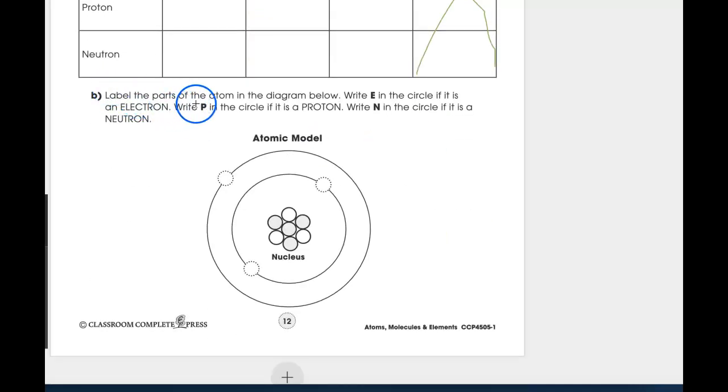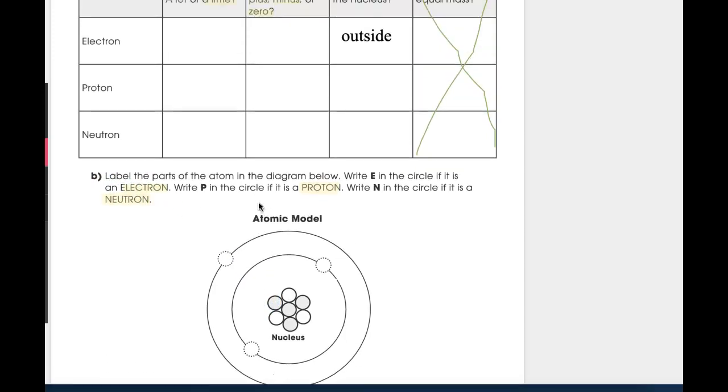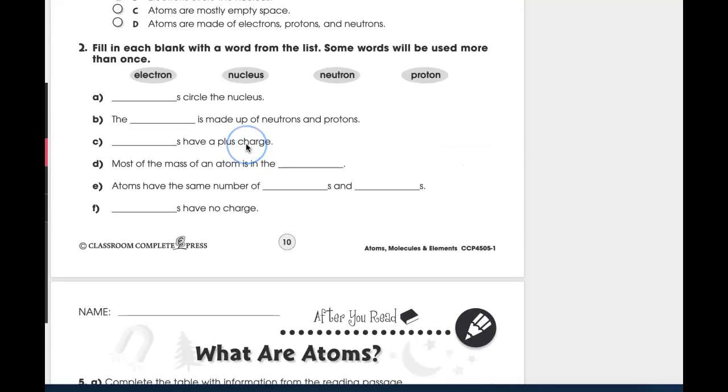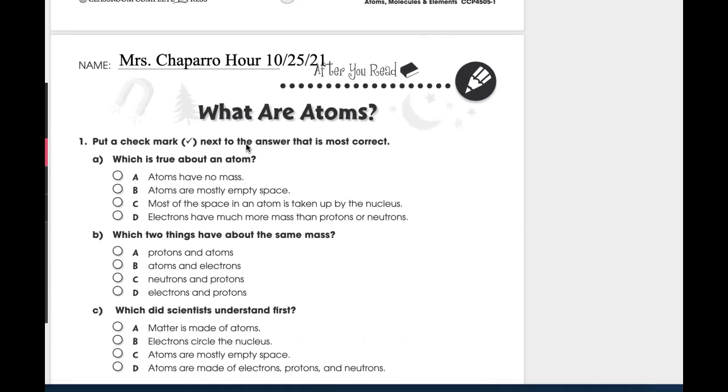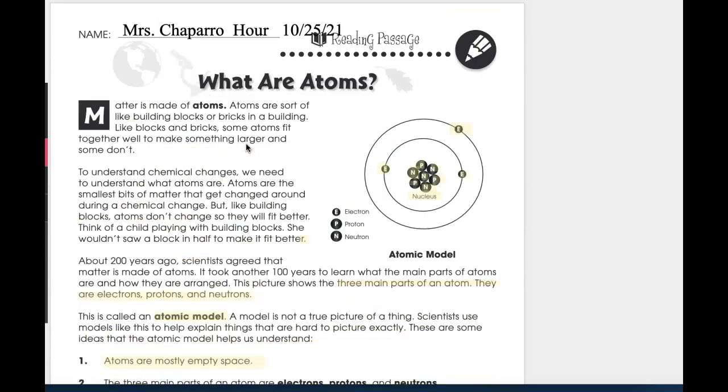Letter B. Label the parts of the atom in the diagram below. Write E in the circle if it is an electron. Write P in the circle if it is a proton. And N in the circle if it is a neutron. So basically, I want you to identify the parts. That's all I have here, guys. I hope that this video was helpful. And I will see you later. Bye.